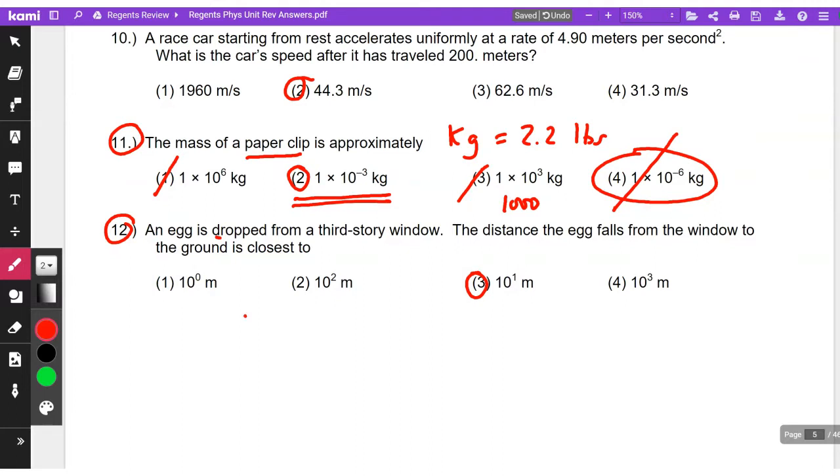Egg is dropped. Once again, dropped at VI equals zero. The distance we're looking for, D equals question mark. Remember, 10 to the 1 is just 10 meters. So it happened on Earth. A is 9.8 meters per second squared. The distance is the unknown.